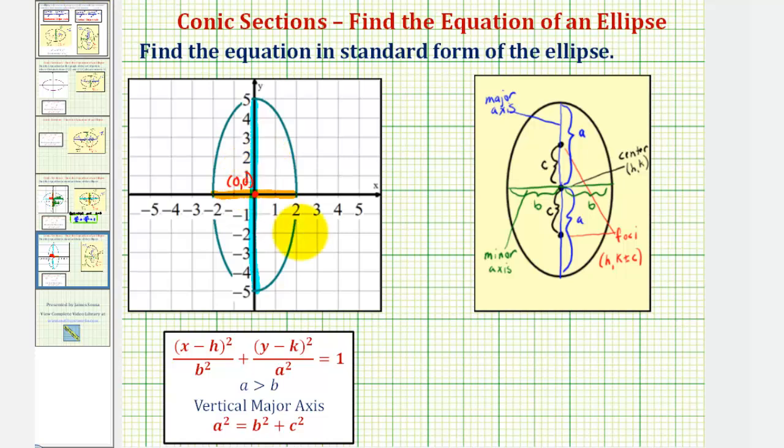The length of the major axis is equal to two A, or we can say the distance from the center to one endpoint of the major axis is equal to A. So notice for our ellipse, A would be equal to five.